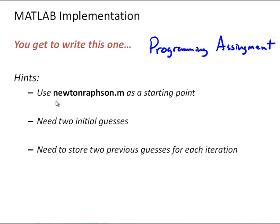First, since this is so similar to Newton-Raphson, use the Newton-Raphson m-file as a starting point and just modify that m-file so that it implements the secant method. And the two main modifications you're going to need to do is instead of inputting the function and the analytical derivative of the function, you're going to need to input the function and two initial guesses. Also, during the iteration, you're going to need to always store two previous guesses for each iteration. Remember, I'm using the term guesses. These are the root estimates for each iteration. So, I think you'll be able to do that as part of the programming assignment.